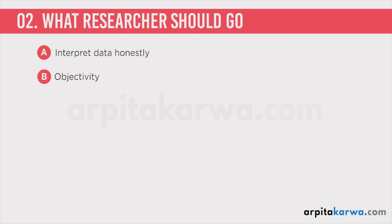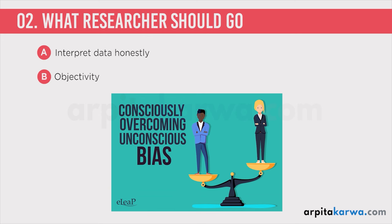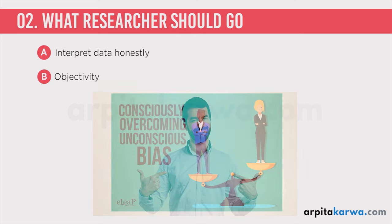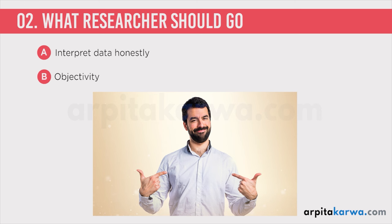Next is objectivity. You should always try to maintain objectivity when you are doing research. Objectivity means that you need to keep the research free from your personal bias. We all have various beliefs and biases in our brain. For example, there is an American who wants to do research and find out who has a higher IQ.